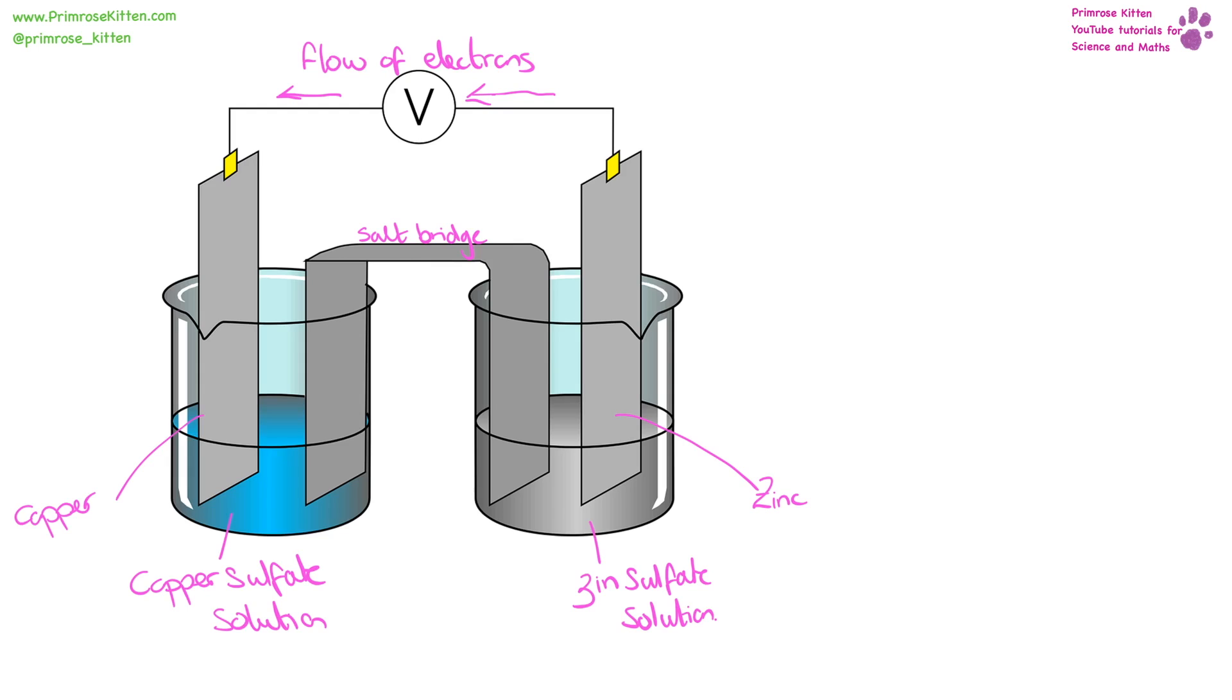Here we have a simple cell with two different metals, copper and zinc, in their own solution. So here is zinc in zinc sulphate solution and copper in copper sulphate solution. They are connected by a salt bridge or an ion bridge and because zinc is high in the electrochemical series, it is going to push electrons this way towards copper. A flow of electrons means we are going to have a potential difference. So the zinc is going to be giving up electrons and the copper is going to be accepting electrons.